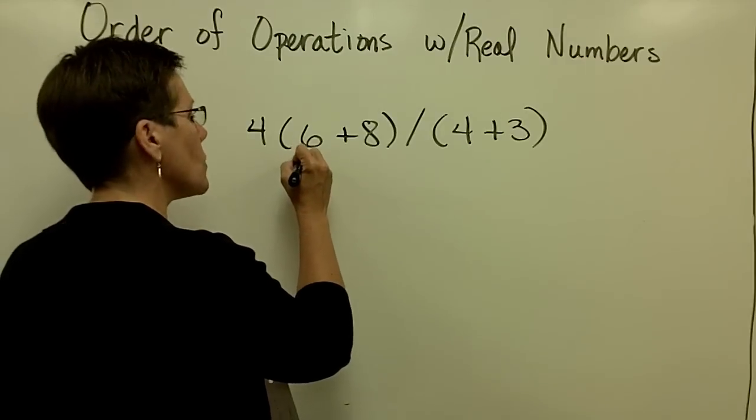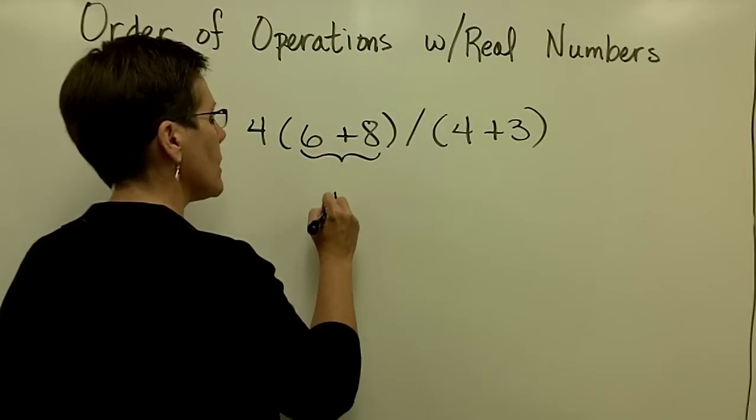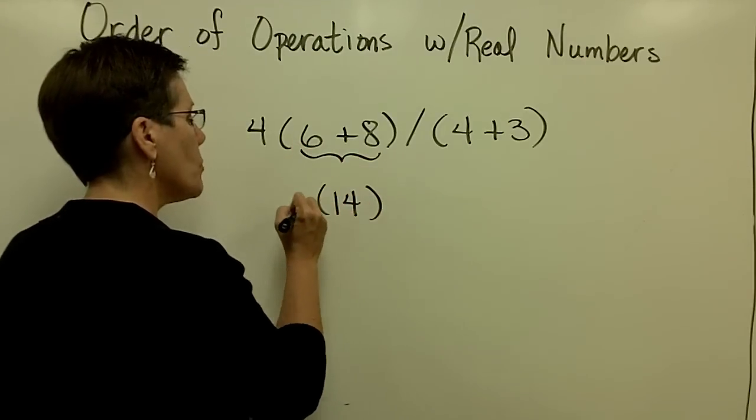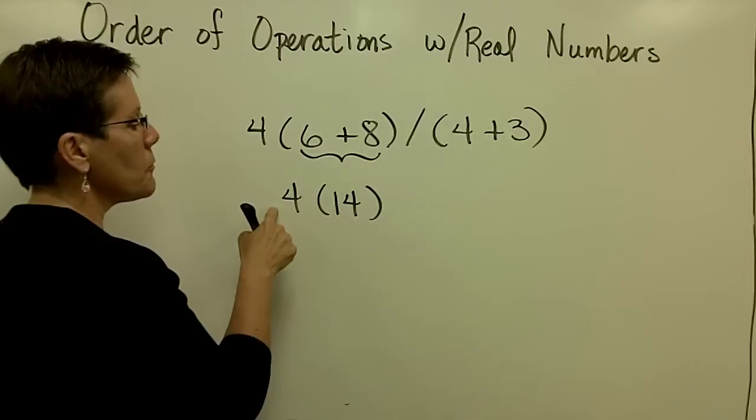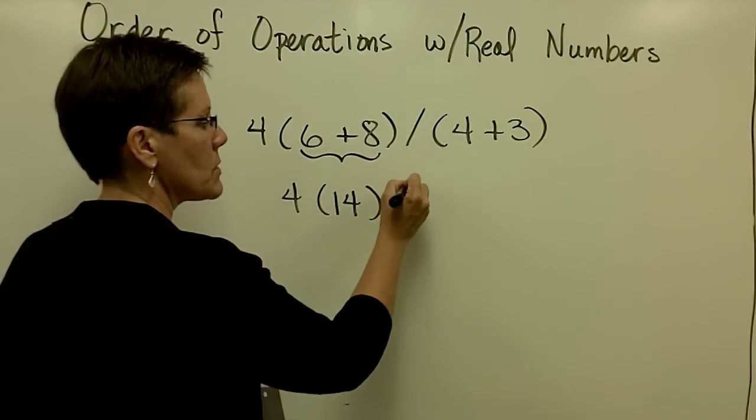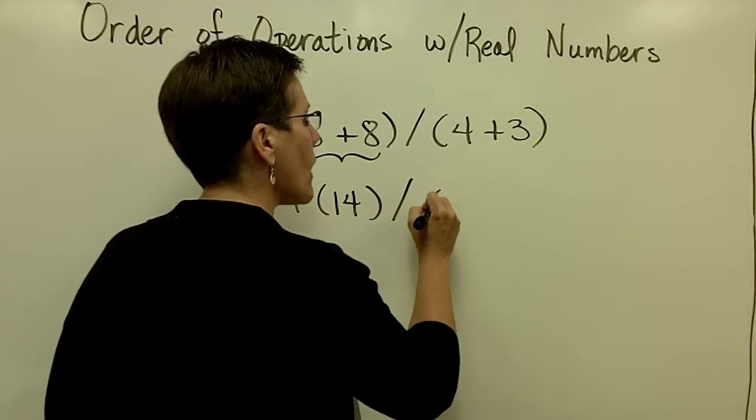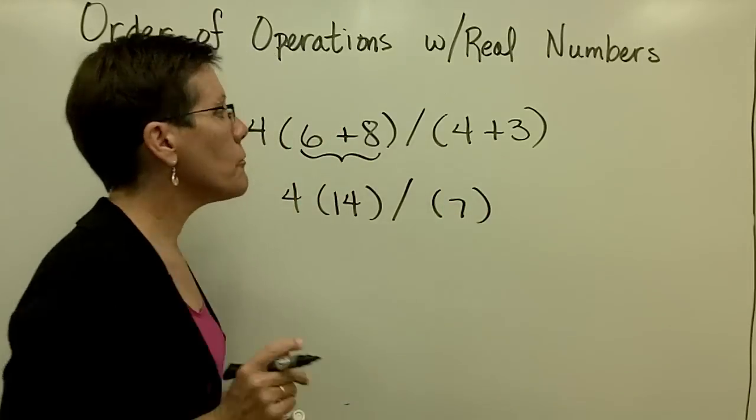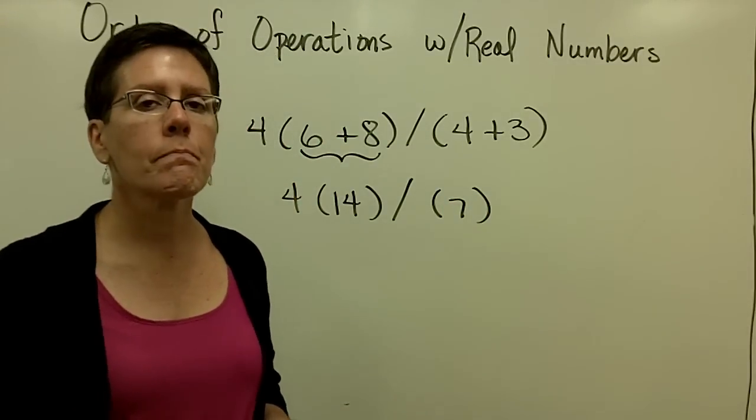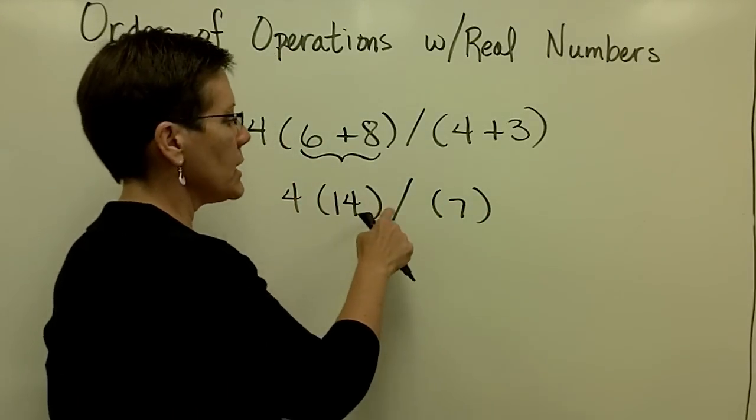Please just do that. So 6 plus 8 is 14. Put parentheses around it, because in front of it is a four times whatever is in that parentheses. Bring that division symbol down, and this is in parentheses too. Order of operations says to do that. Four plus three is seven.